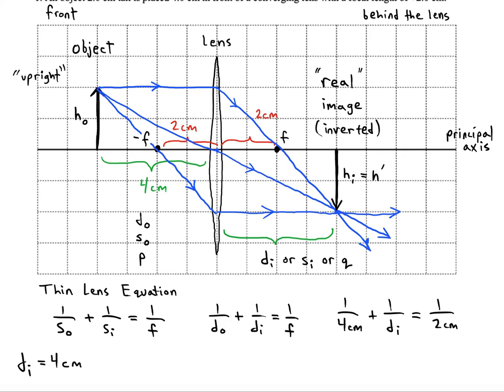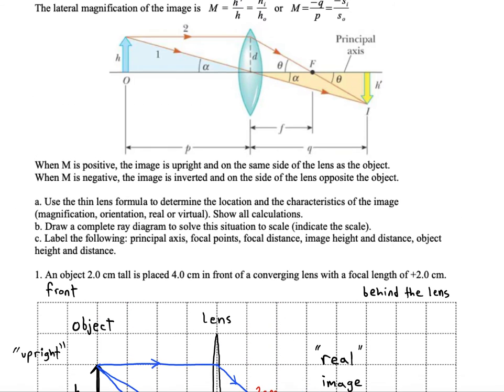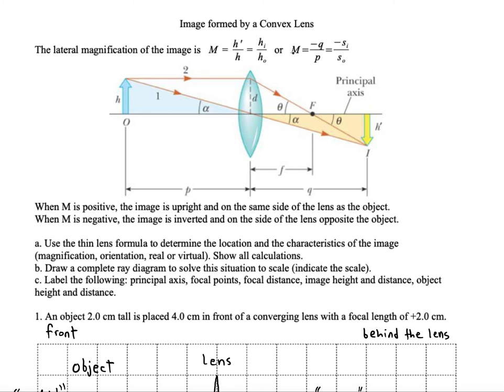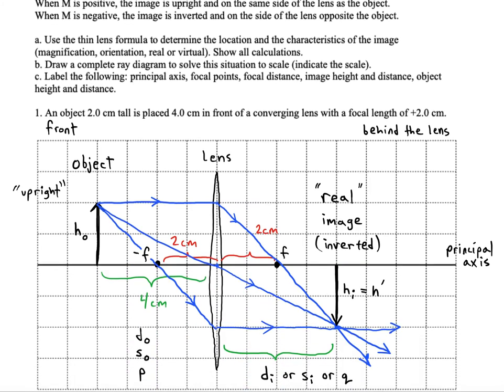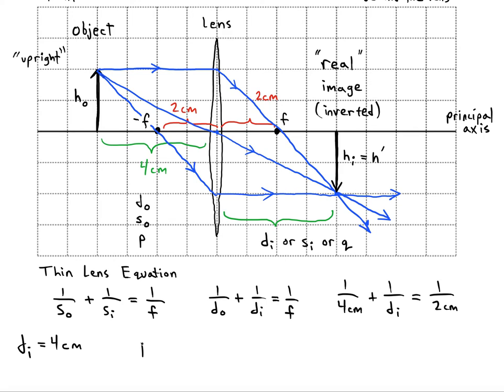One of the next things to find would be the magnification. And you can see above there's a formula for that. It's going to be either the height of the image over the height of the object or we could do negative distance of image over distance of object. Now I'm going to use the second formula. The reason I'm using that one is I already calculated the distance of the image and I was given the distance of the object, you know. But we didn't talk about the height of the image yet, so I'll use this version of the formula for now. So it'll be negative four centimeters over four centimeters, which is a magnification of negative one.